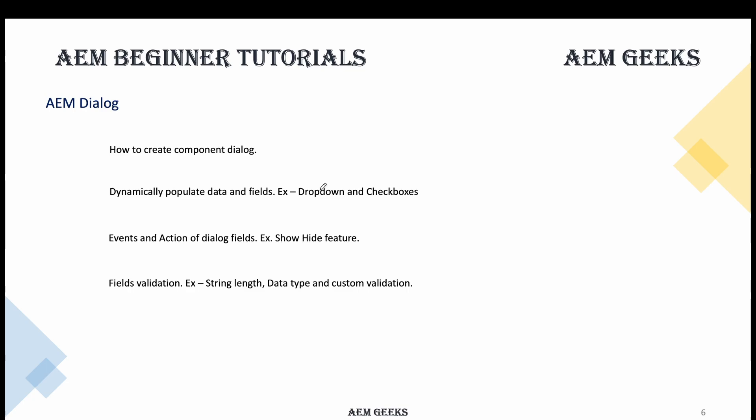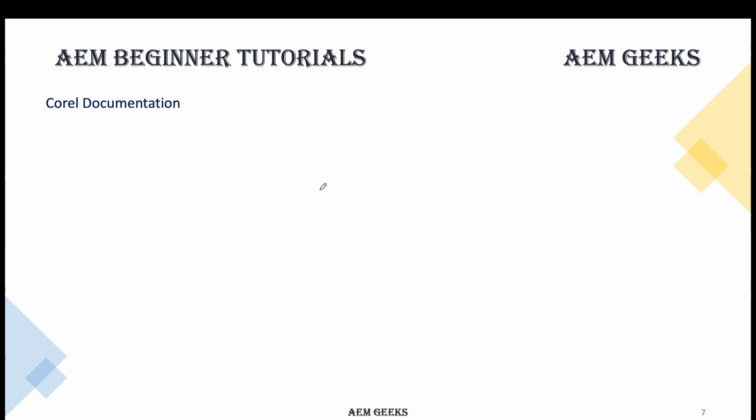We'll see the most common use cases like hide and show, and then we'll cover field validation — obviously you have a dialogue but you might need validation, so we'll see how to write validation in a standard way. There is documentation available for Coral Foundation — please go back and check this documentation. I will explain in coming tutorials how to use that documentation to understand how each field works. This is really important and I'll be using this documentation to explain the fields in detail.